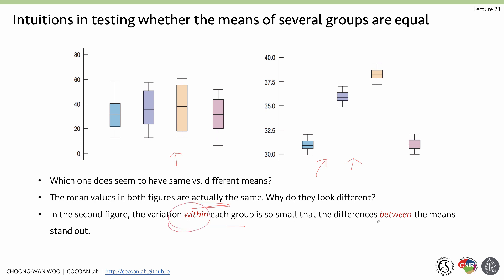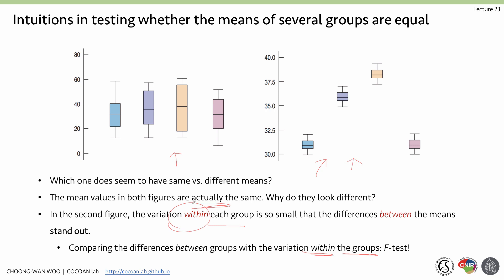In the second figure, the variation within each group is so small compared to the variation between groups that the differences between the means really stand out. So to answer the question about whether these groups have the same or different means, we need to compare the differences between groups with the variation within the groups.